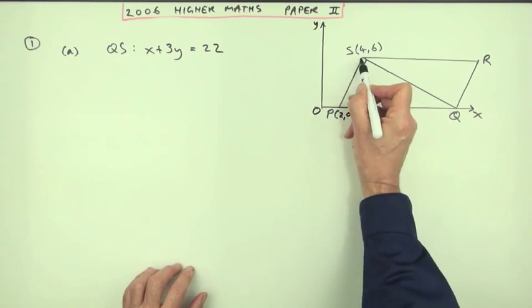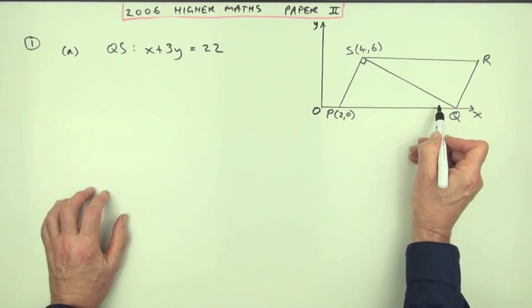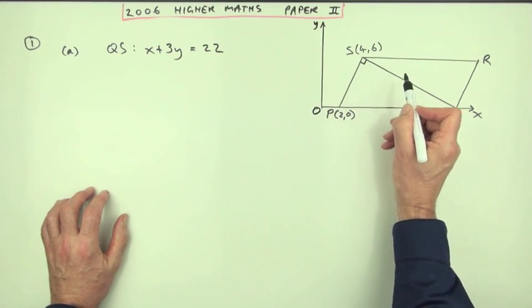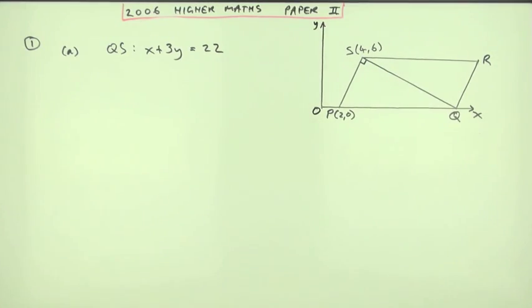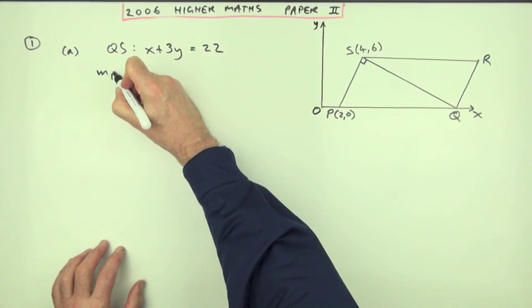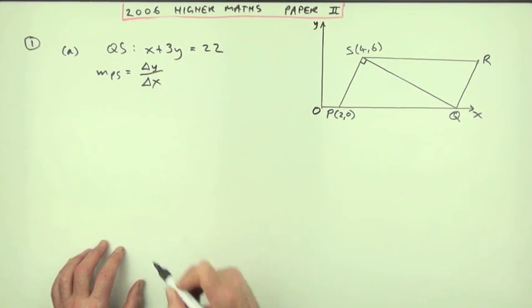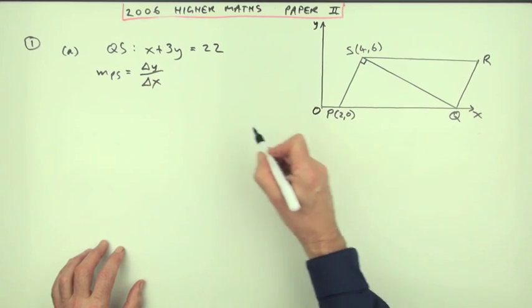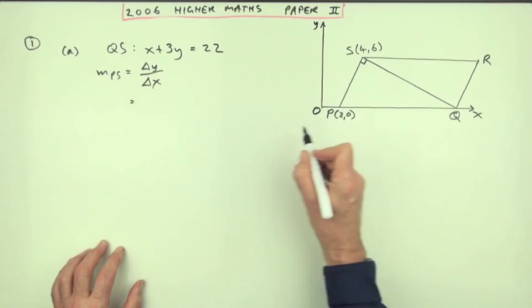So find the equation of SQ, writing it in this form. Well, since it's at right angles, I can get its gradient from the gradient of the line it's at right angles to, which is PS. So first step, what's the gradient of PS? Well, that will be the distance up over the distance along. Since I've got this diagram, I don't need to write 2,0 going to 4,6. So that'll be the difference in the y's, start at this one, 6 take away 0.